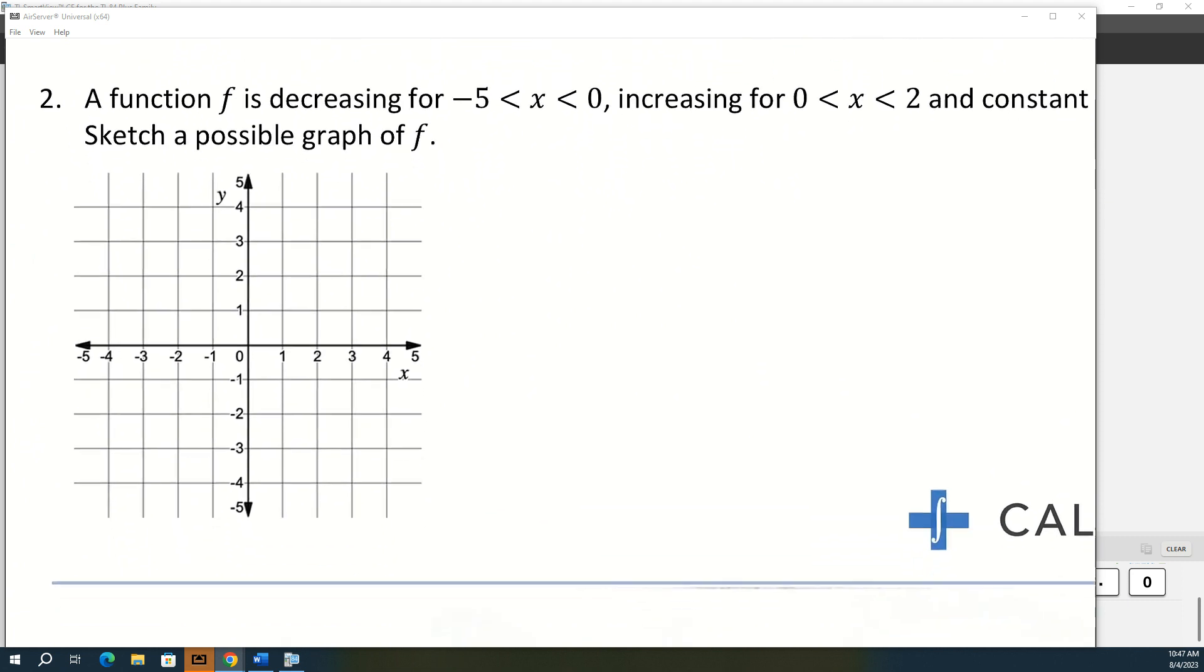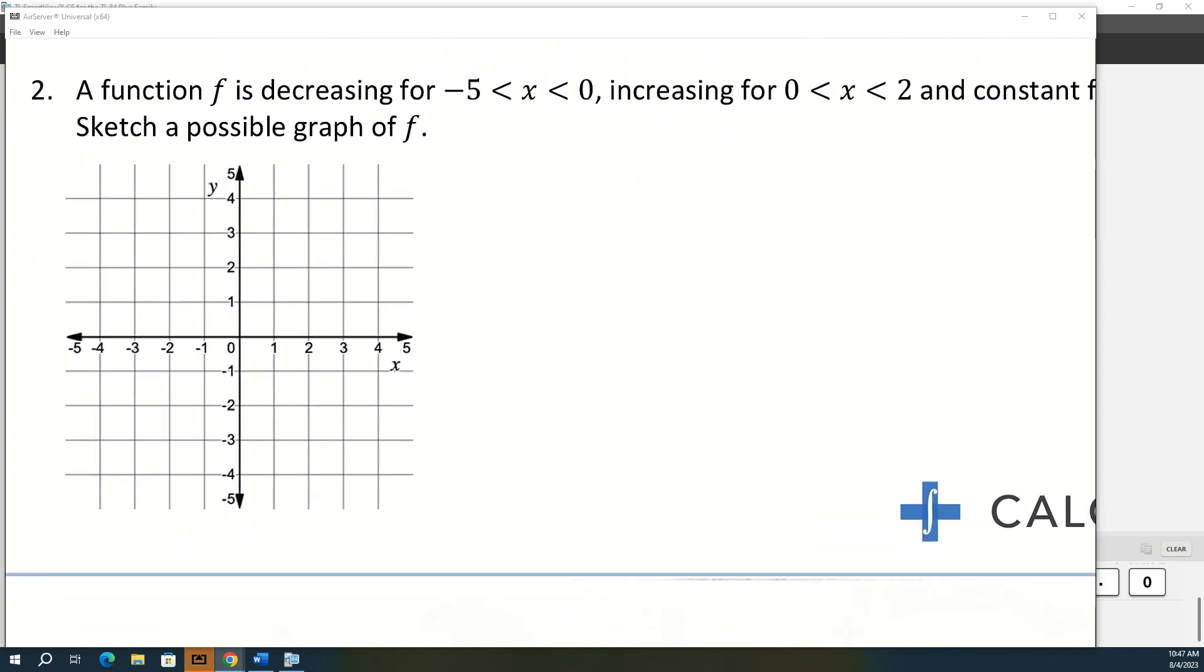So we're going to be decreasing from negative five to zero. So where x is negative five to zero. So you can make it super steep. You can make it curvy. However you want to. Just between those two numbers, we need to be falling from left to right. So I'm going to make it kind of curvy. You don't have to stop at negative two on the y. You can stop at negative five on the y or negative three, or you can have a positive place where you stop as long as you're falling.